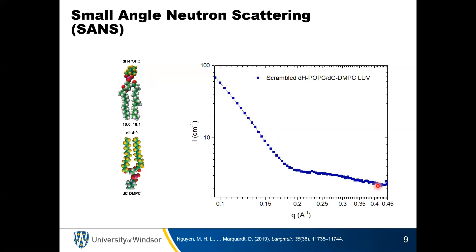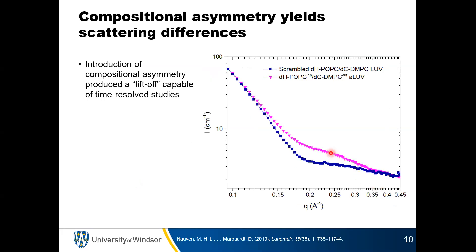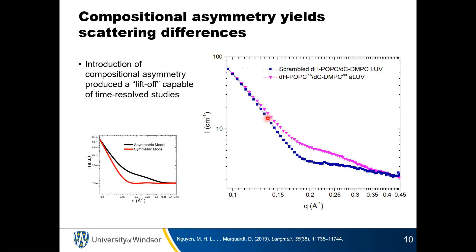When a cell generates asymmetry, it costs energy — it's not the equilibrium state, so the membrane wants to drive to a symmetric or scrambled form. That's where the term 'scrambled' comes from. If we generate an asymmetric bilayer, sure enough we get the characteristic liftoff. This is a great initial test: can we actually see the asymmetry of the bilayer experimentally? The theoretical curves and our actual experimental data look very similar, which is an excellent sign we're moving in the right direction.